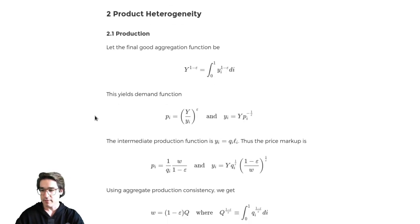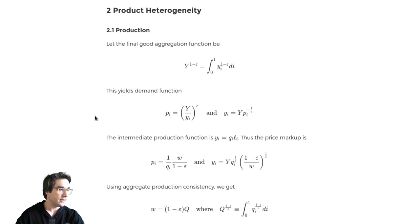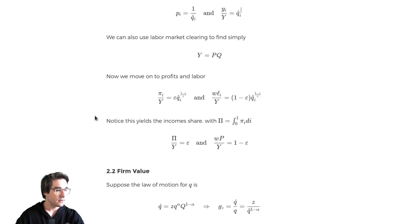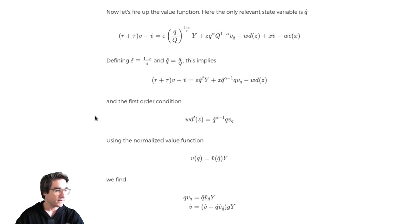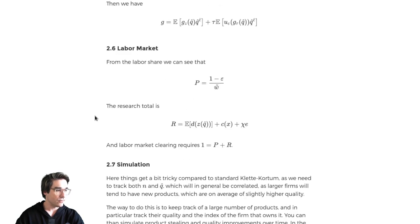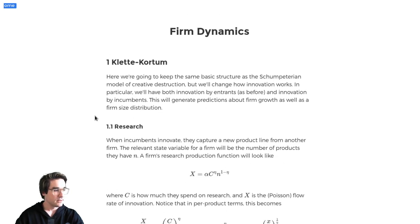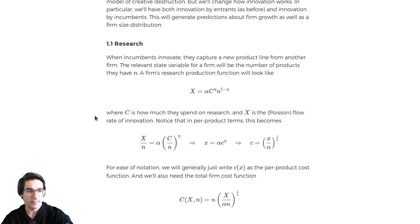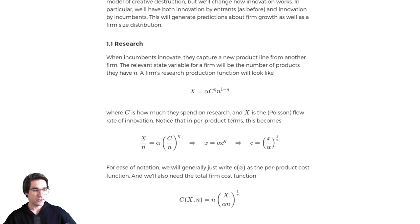Then we're going to do Klette-Kortum on steroids where you've got more heterogeneity across products and a different aggregation, which induces a lot more heterogeneity across products and across firms as well. That brings in some more advanced continuous time stuff which I think is useful to be aware of and comfortable with. All this stuff is on the website so you can go back and check it out there.